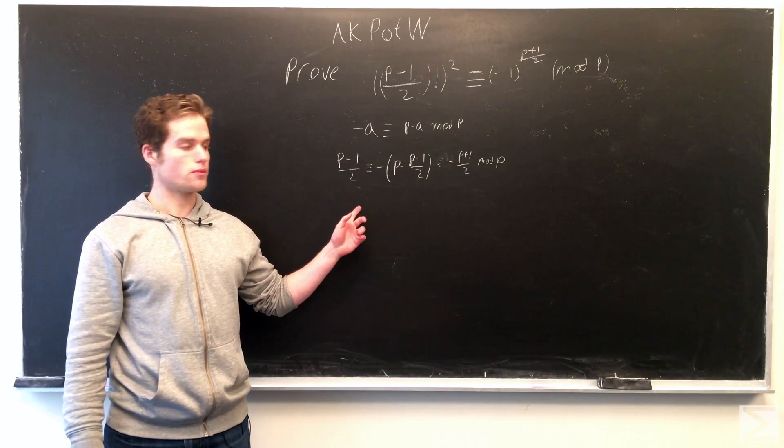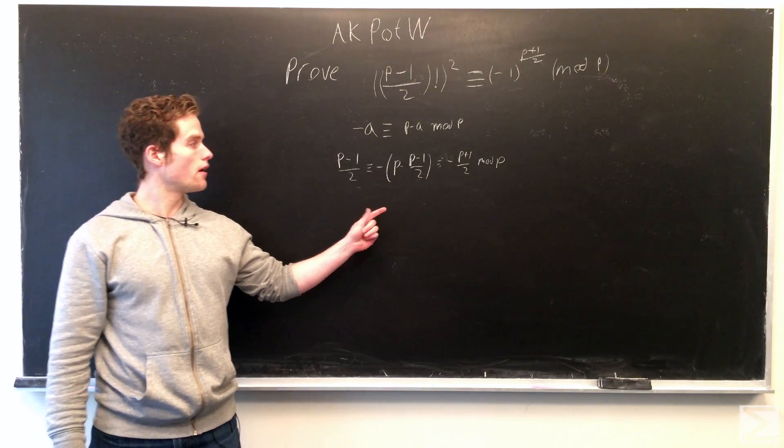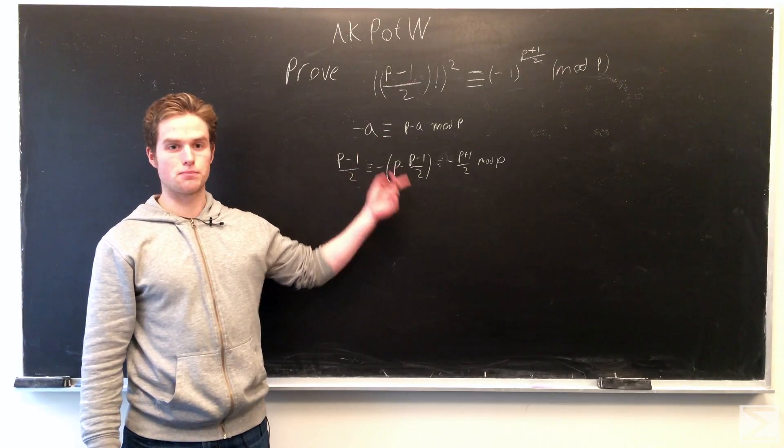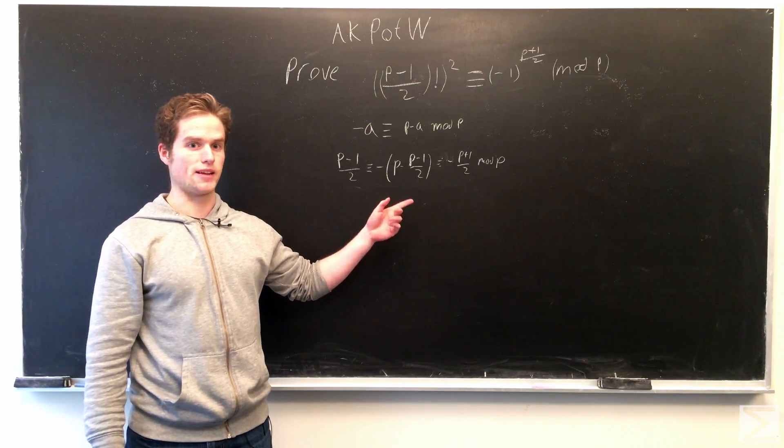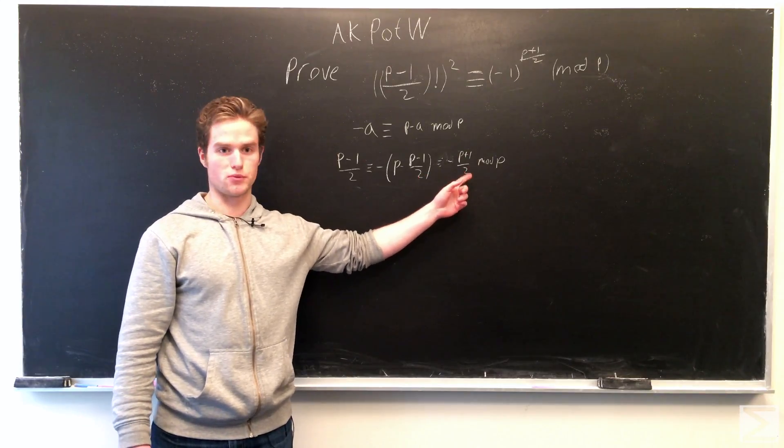(p-1)/2 is congruent to -(p-(p-1)/2), which is just congruent to -(p-1)/2, and this is congruent to -(p+1)/2 if we combine these.